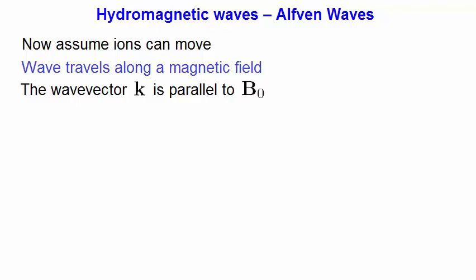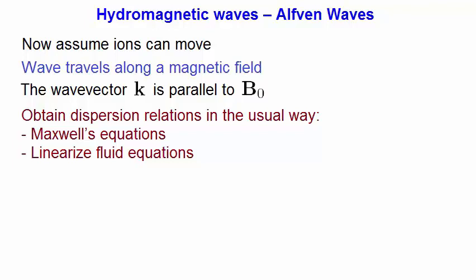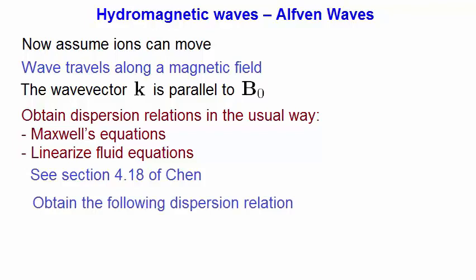Then we go through the same procedure of solving Maxwell's equations and the linearized fluid equations in order to obtain the dispersion relation. For details about how to do this, see section 4.18 of Chen. We finally obtain the following dispersion relation. Where the left hand side, omega on k is nothing more than the phase velocity, V phi, and the right hand side is quite a curious expression for such a dispersion relation. Because as you'll notice, on the right hand side you'll see a dependence on the magnetic field B0, and the mass density rho.